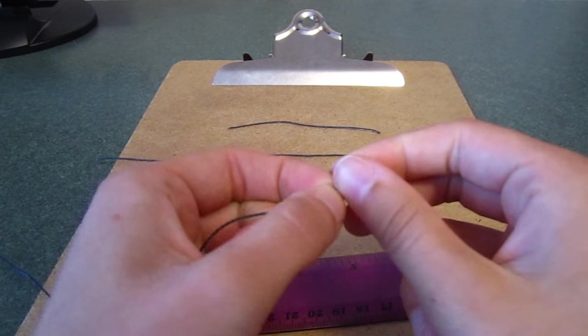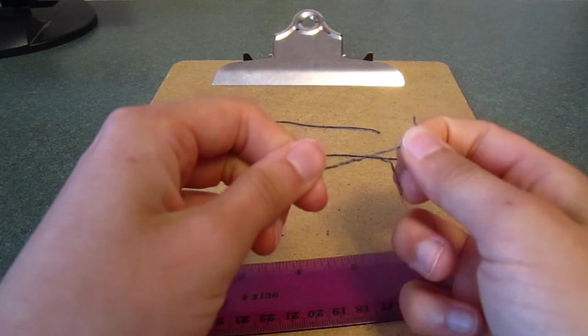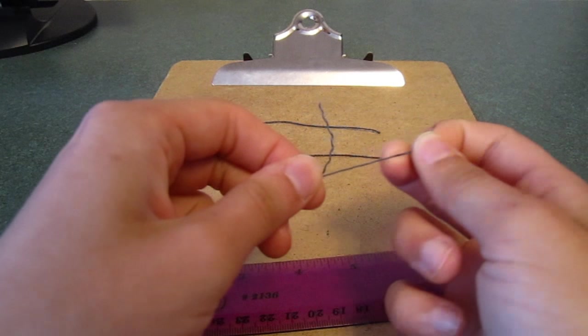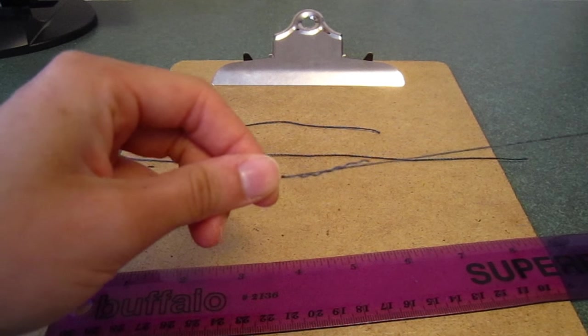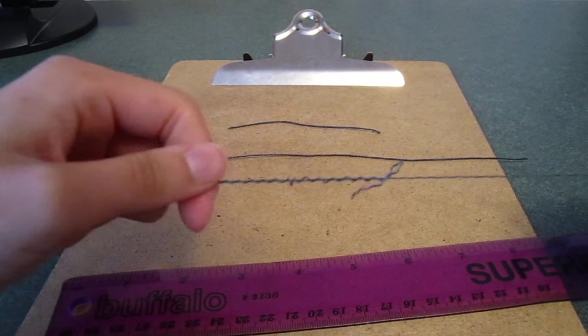I cut the 18 inch strand first, I untwisted one end and separated the two strands that comprise this cord. It will be quite curly at first, but you can stretch this out to eliminate the curls.